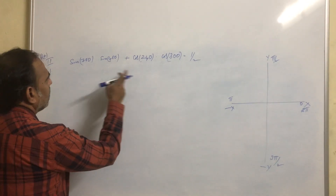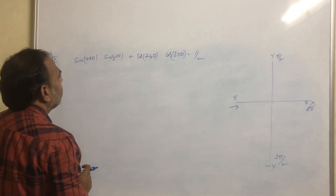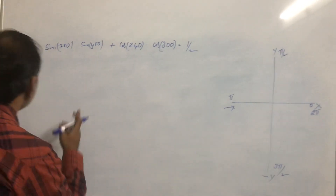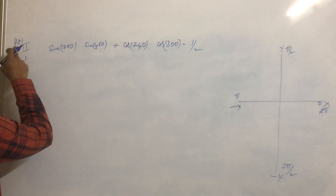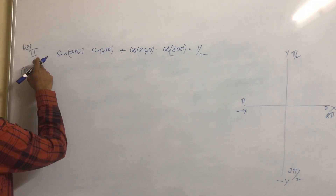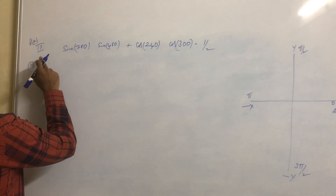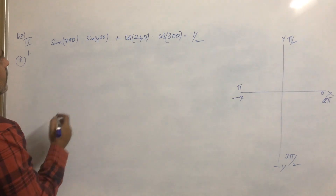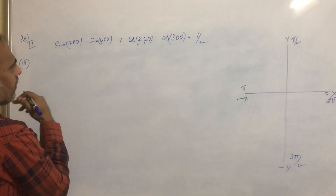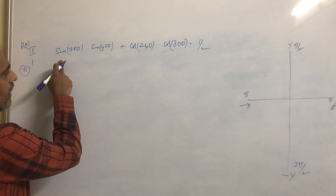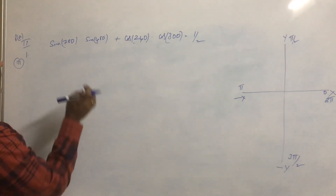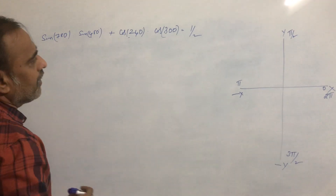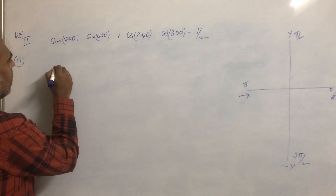In this problem we will solve: sin780 · sin480 + cos240 · cos300 = 1/2. This problem is in section 6A. Just refer to the textbook to solve these types of problems. What we have to do is take each and every term, solve for that term, substitute the result in the equation, and get the final result.